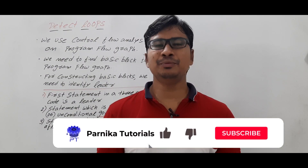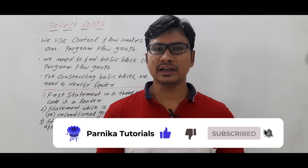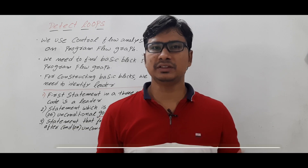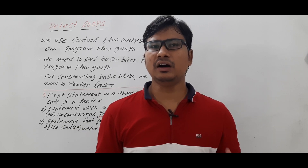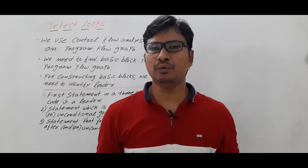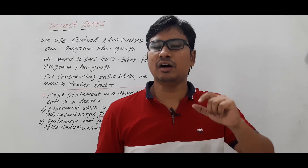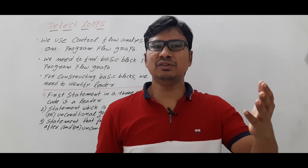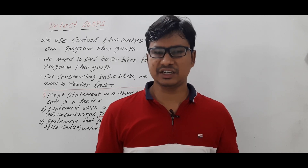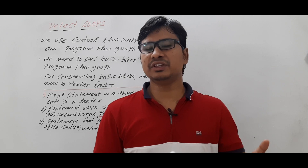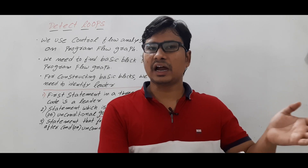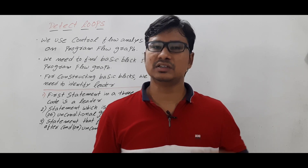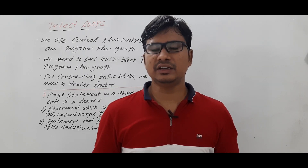Good morning friends, welcome to Pannika Tutorials YouTube channel. In this video I want to discuss how to identify or detect the loops from the three-address code. Detecting and identifying the loops from the high-level language is simple — if there is a keyword like 'for', 'while', or 'do while', we can say that they are loops. But when we convert the high-level language to three-address code, we will not find such keywords. A loop can be represented with a combination of a conditional or unconditional goto statement with the help of the if condition.